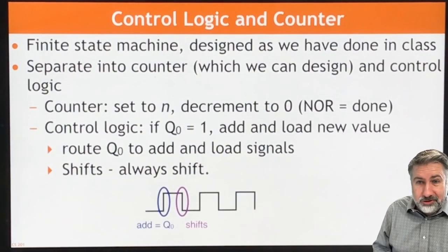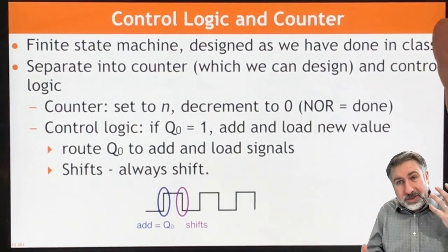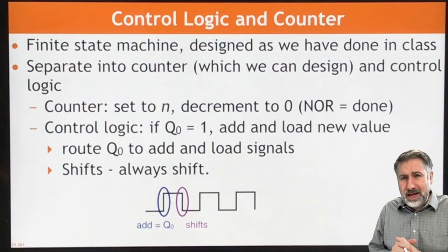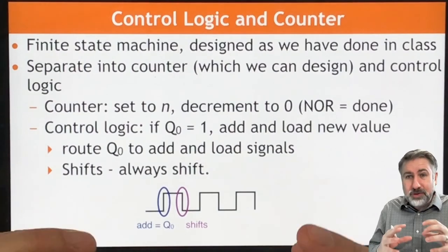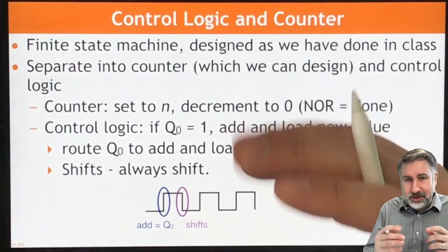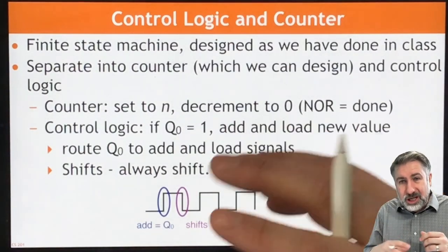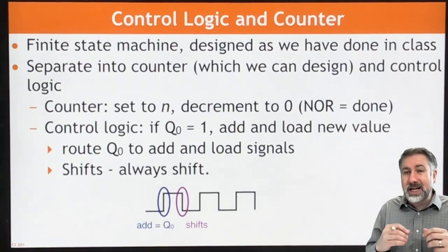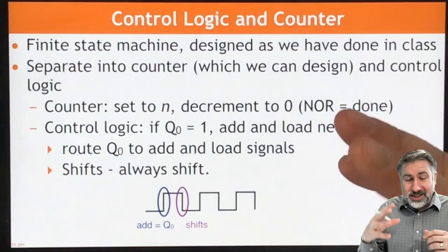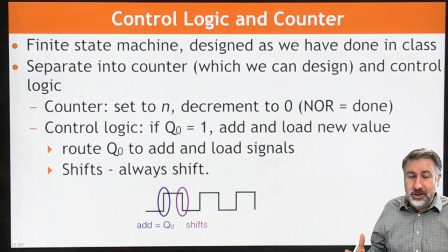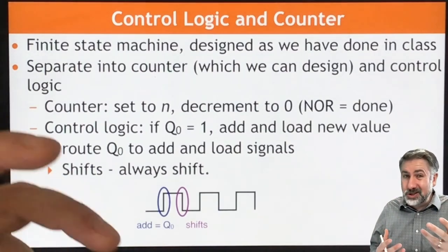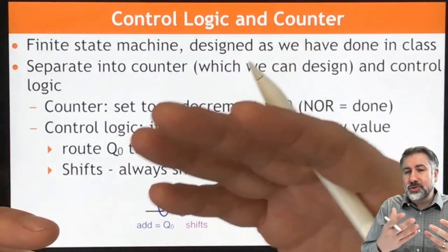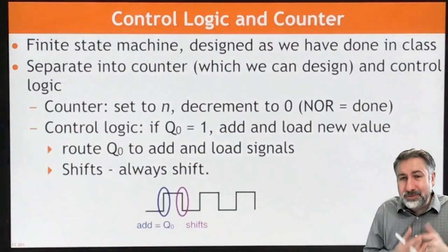Our next step will be: we need a counter that can decide when we're done, we'll store P, Q, and R in shift registers, and we'll need some other logic to control the circuit. This control logic is going to run in opposition to the functionality of the device. The control logic part of the circuit will run on the opposite clock phase — it will receive feedback from the circuit, decide what to do next, and send control information out to the rest of the circuit.